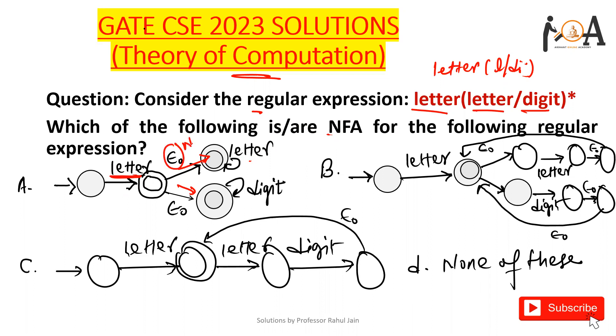This is basically a null move. After the letter we can take a null move and we can take a letter, but we cannot take digit. If you want to take digit you need to choose this path. But after this digit if I want to choose letter, that is not possible here.